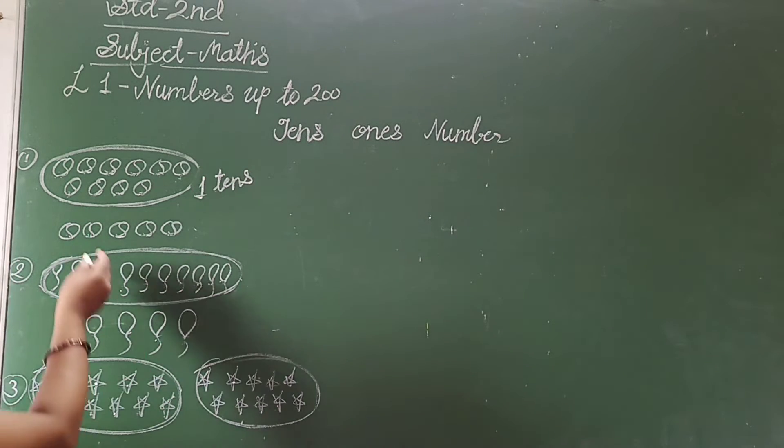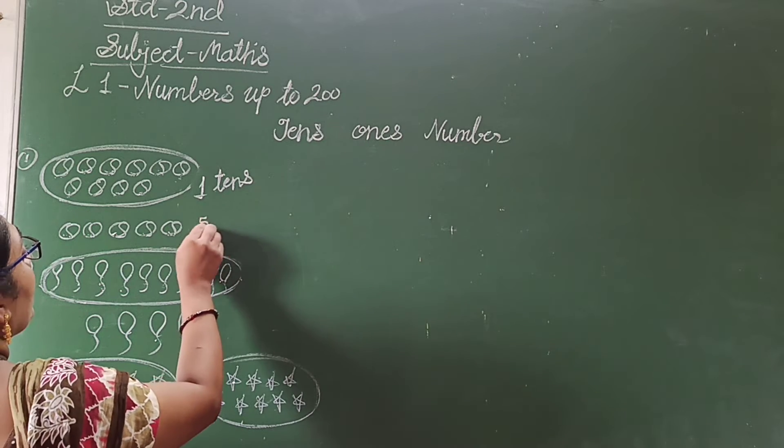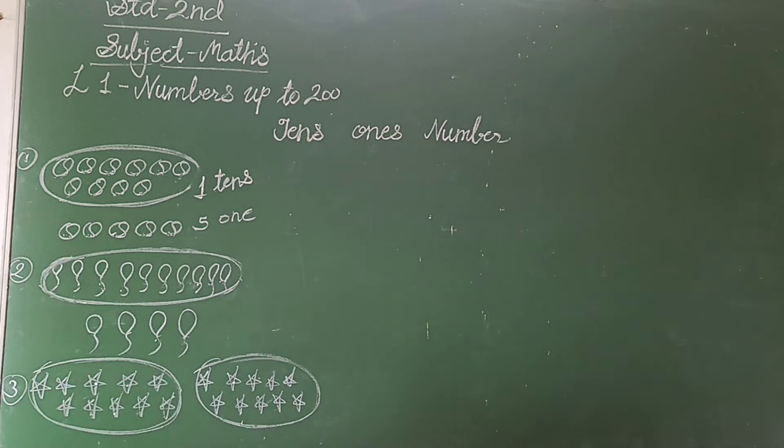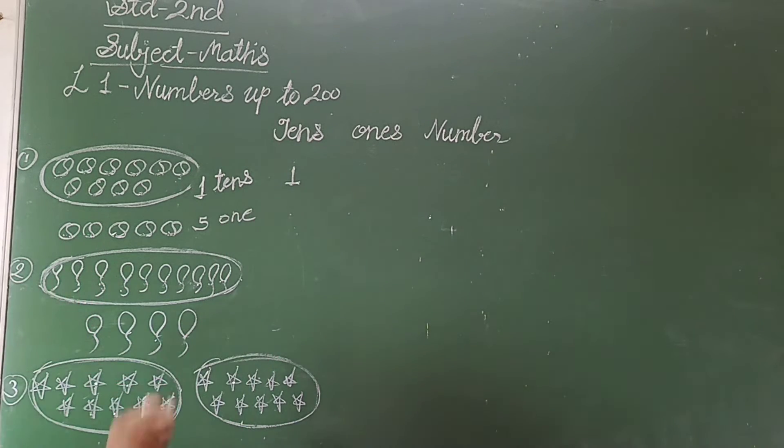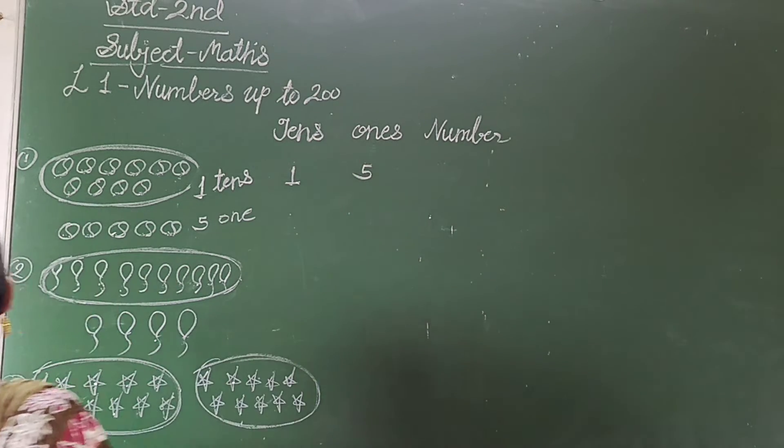And remaining ball counted 1, 2, 3, 4, 5. Means 5 1s. Okay. 1 10s you write in the 10s column. One number you write in the 10s column. And 5 1s, means 5 number you write in the 1s column.